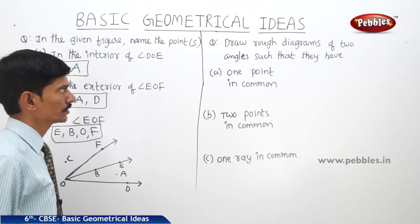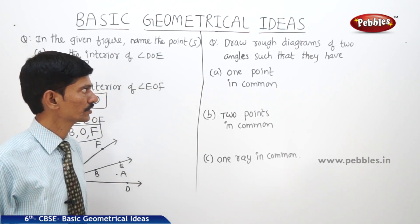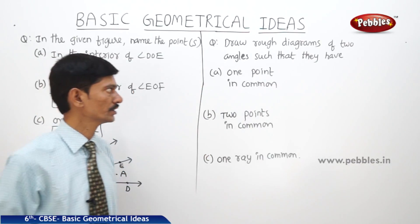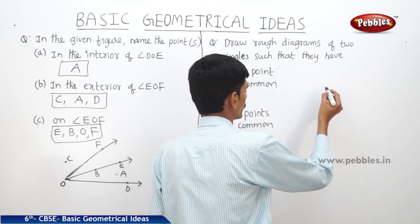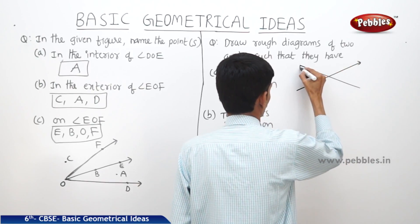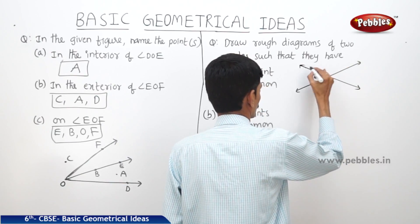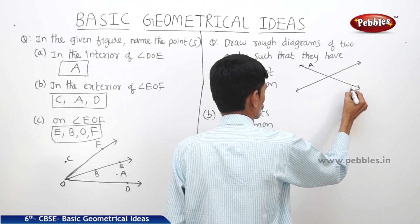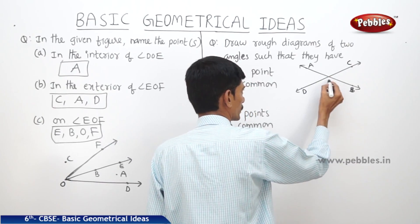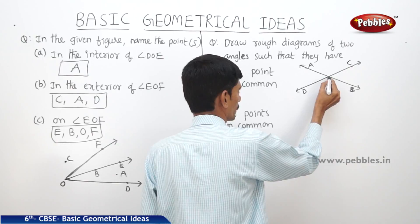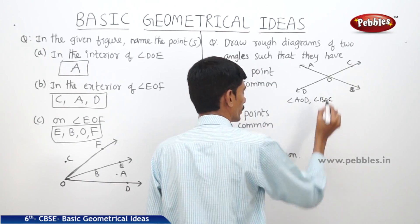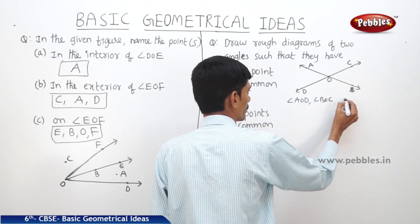Next, draw rough sketches of two angles such that they have one point in common. We should draw two angles such that they have only one point in common. We can draw two intersecting lines A, B and C, D. These two lines intersect at O. So we can say that angle AOD and angle BOC have only one point in common, that is O. The common point is O.